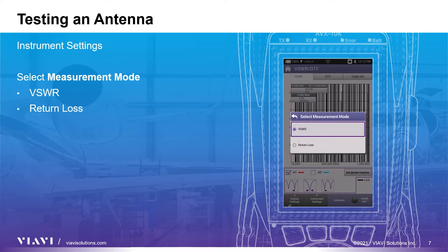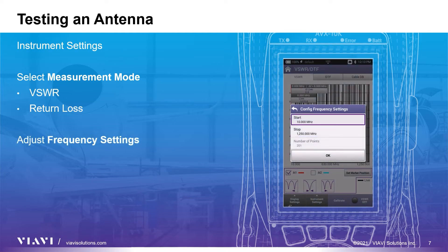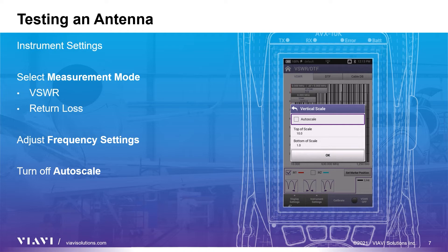This setting is usually determined by how the manufacturer has specified the antenna. Click on the Instrument Settings button to modify this setting. The frequency band can also be limited to the range of the antenna being tested, if preferred, or you can just leave the settings to sweep from 10 to 1250 MHz. Also, when using the VSWR measurement mode, you will want to turn off the Auto Scale feature. This setting is found under the Vertical Scale option in Instrument Settings.